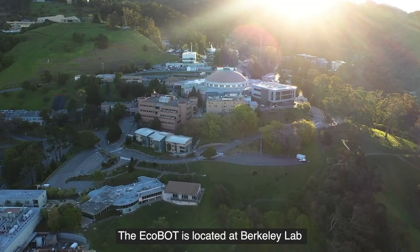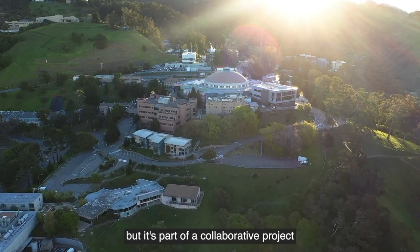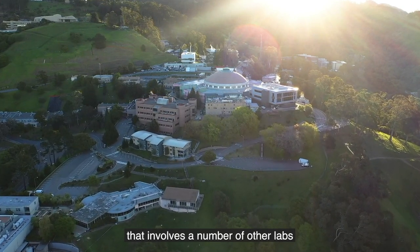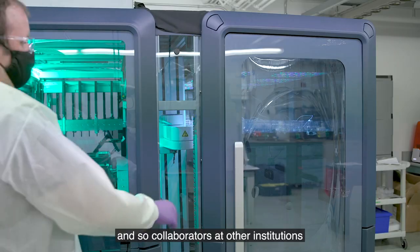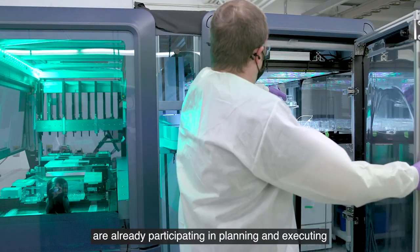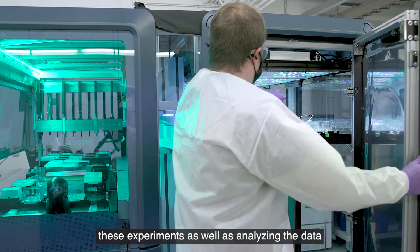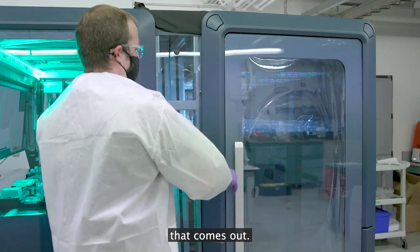The ECOBOT is located at Berkeley Lab, but it's part of a collaborative project that involves a number of other labs, in particular the Pacific Northwest National Laboratory. Collaborators at other institutions are already participating in planning and executing these experiments as well as analyzing the data that comes out.